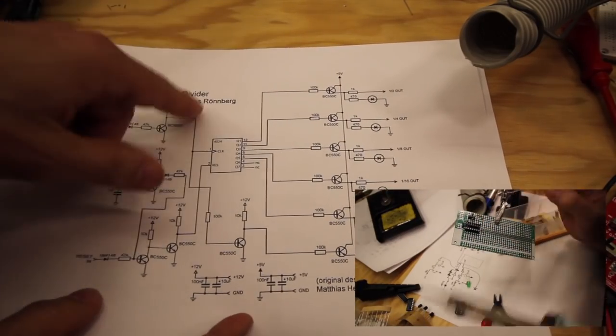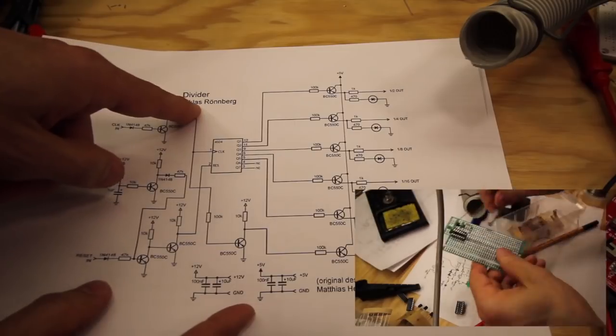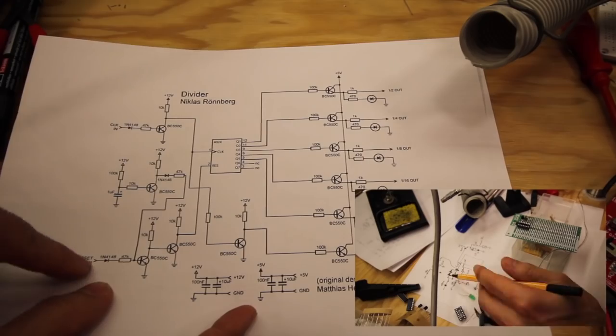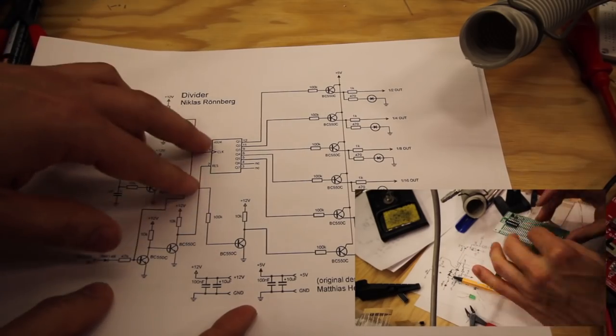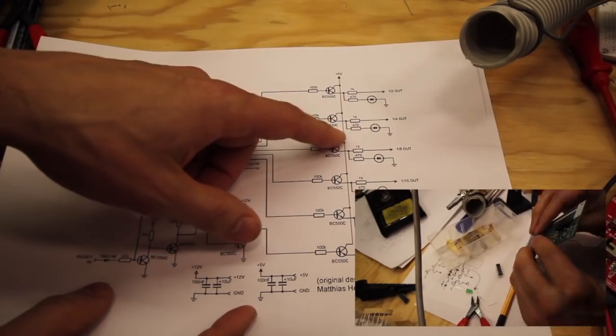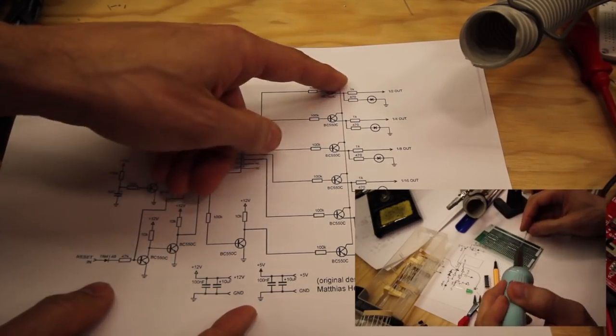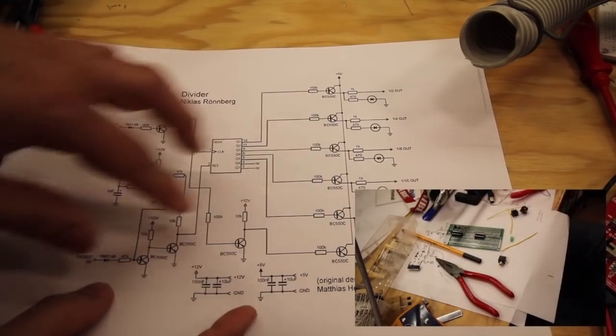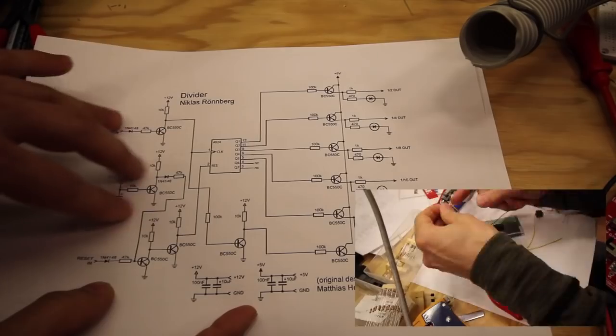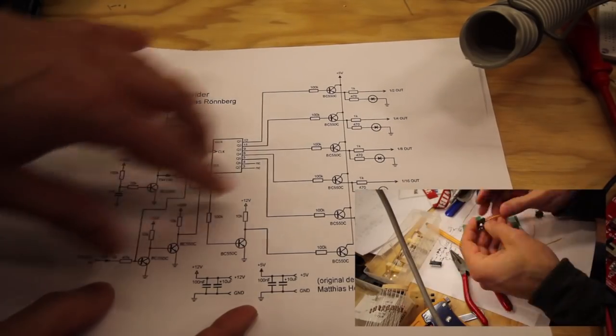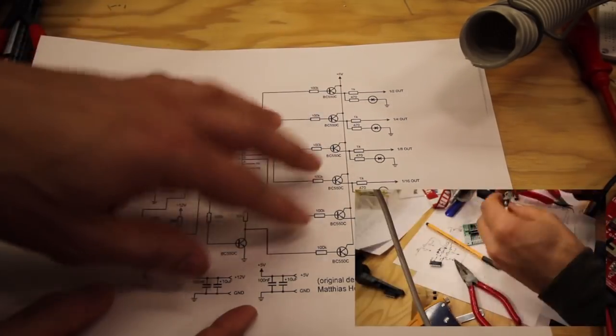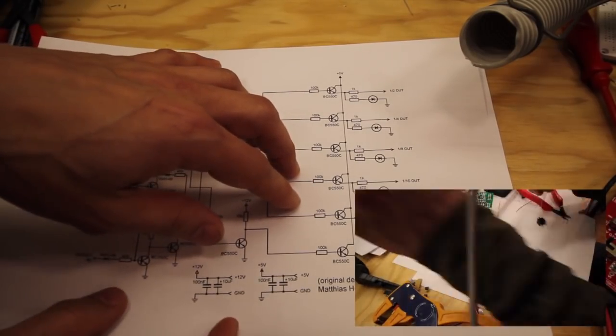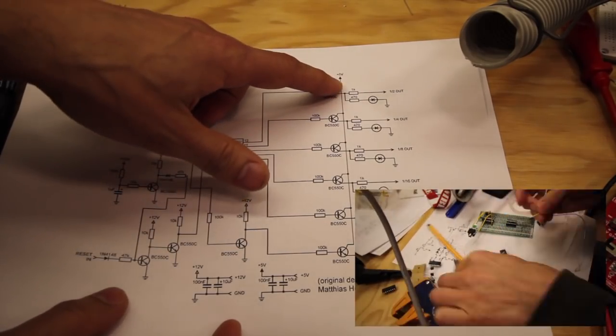This one is by Niklas Rönnberg. I've done a few of his modules already. Reset input, clock input and 4024, and he uses 5 volts on the output side. So again he uses both plus 12 volts on this side of the clock divider and 5 volt power supply on this one. Just like with the AR that I built, I had to make an onboard 5 volt regulator.